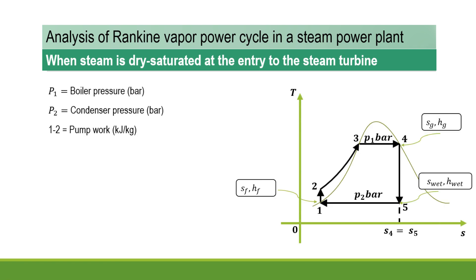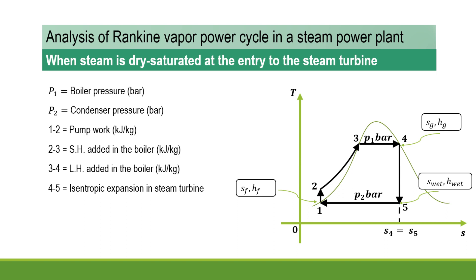To summarize the processes: 1 to 2 is the pump work; 2 to 3 is the sensible heat added in the boiler; 3 to 4 is the latent heat added in the boiler; 4 to 5 is the isentropic expansion; and 5 to 1 is the heat rejected in the condenser, expressed in kJ/kg.